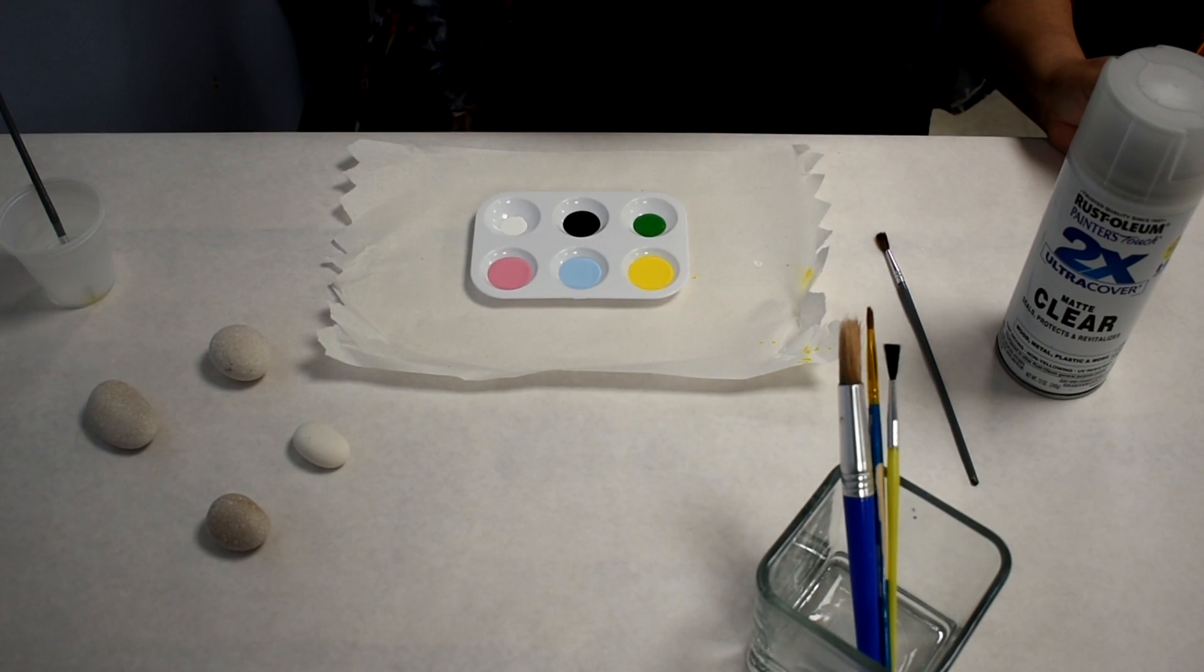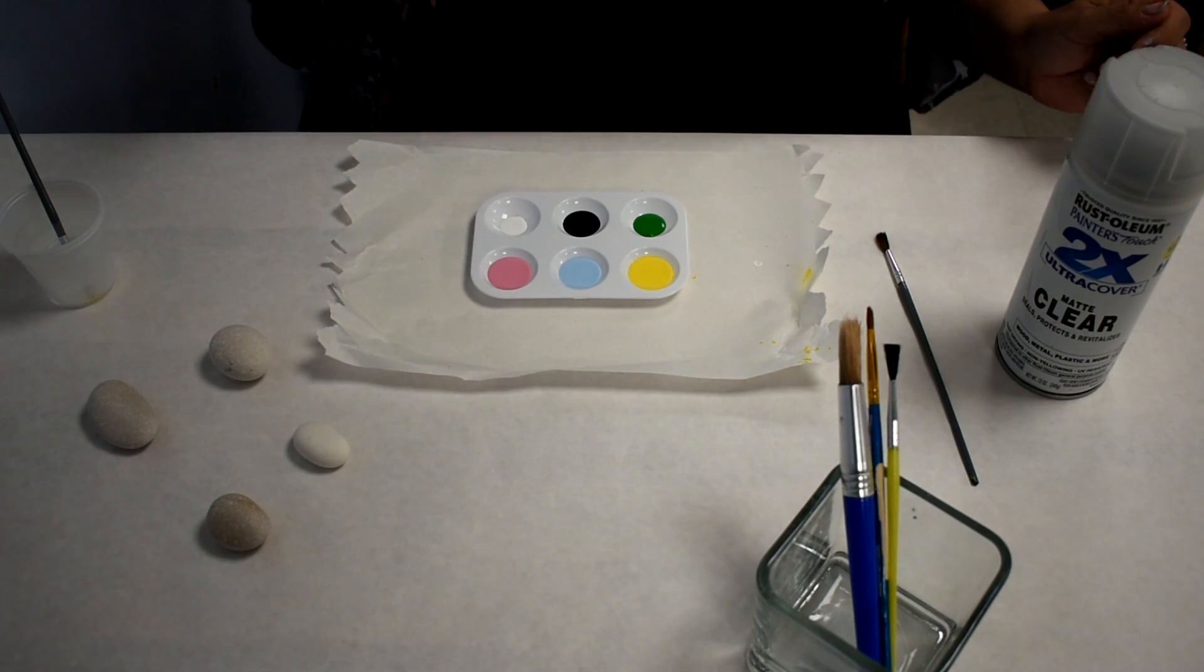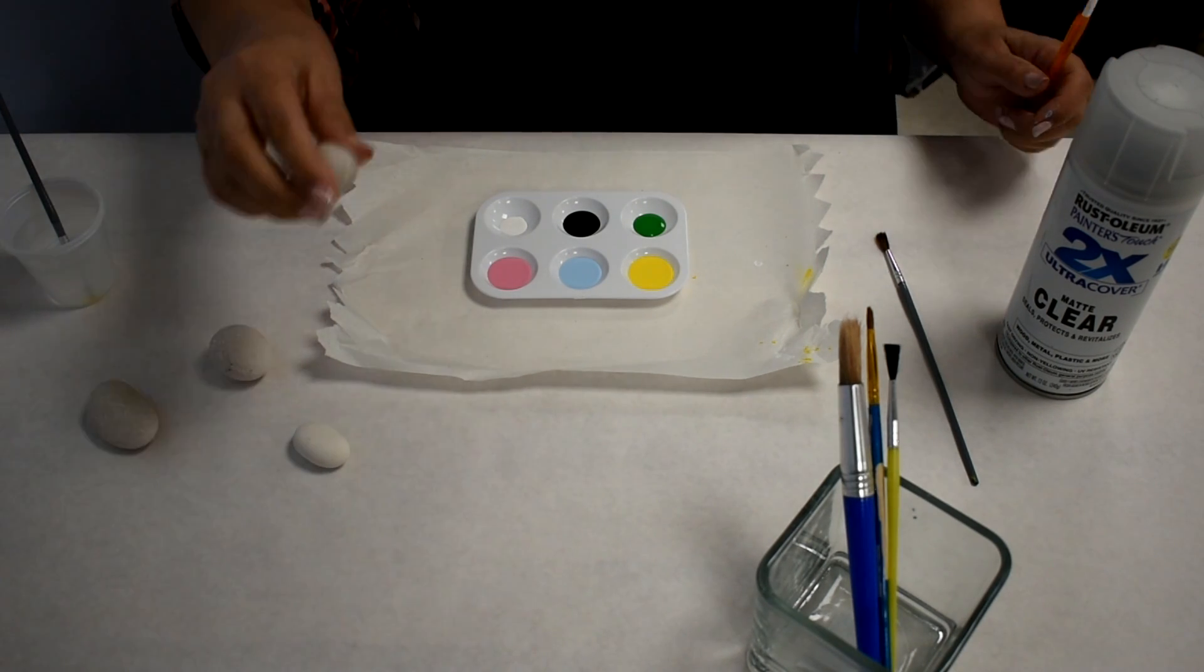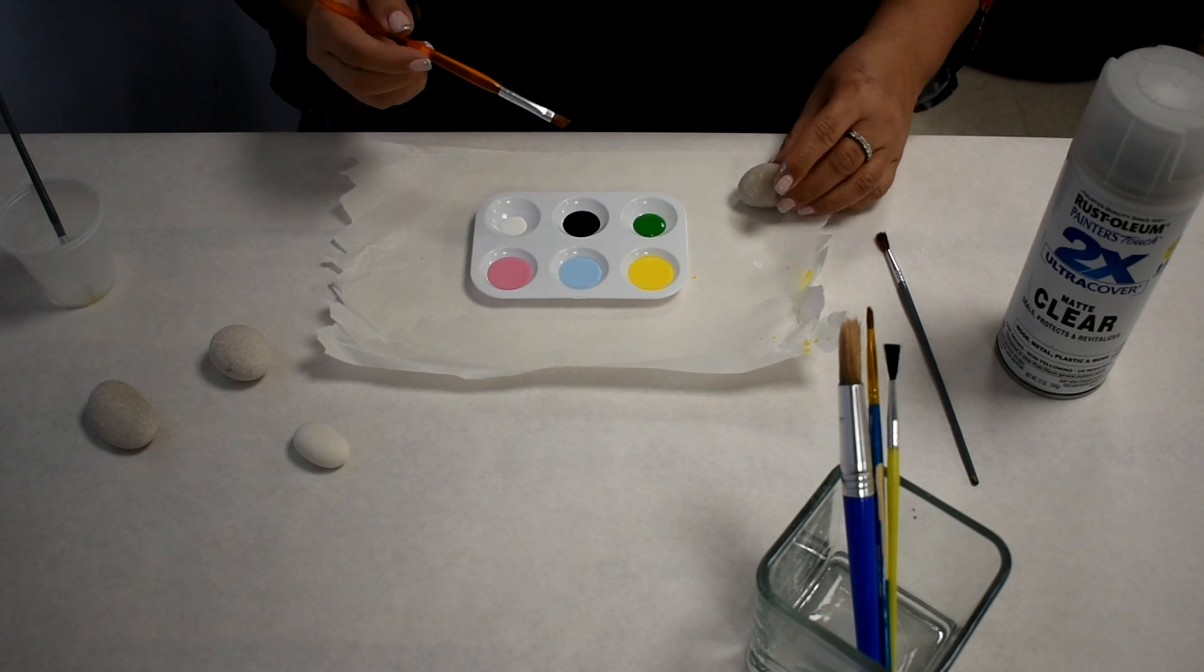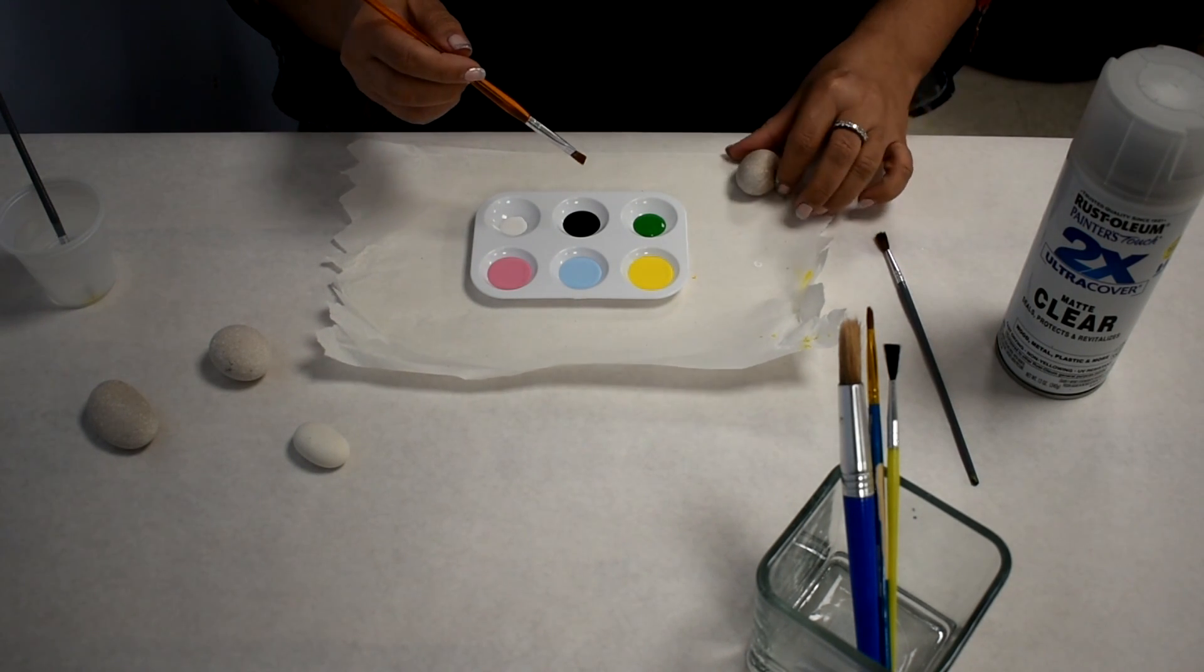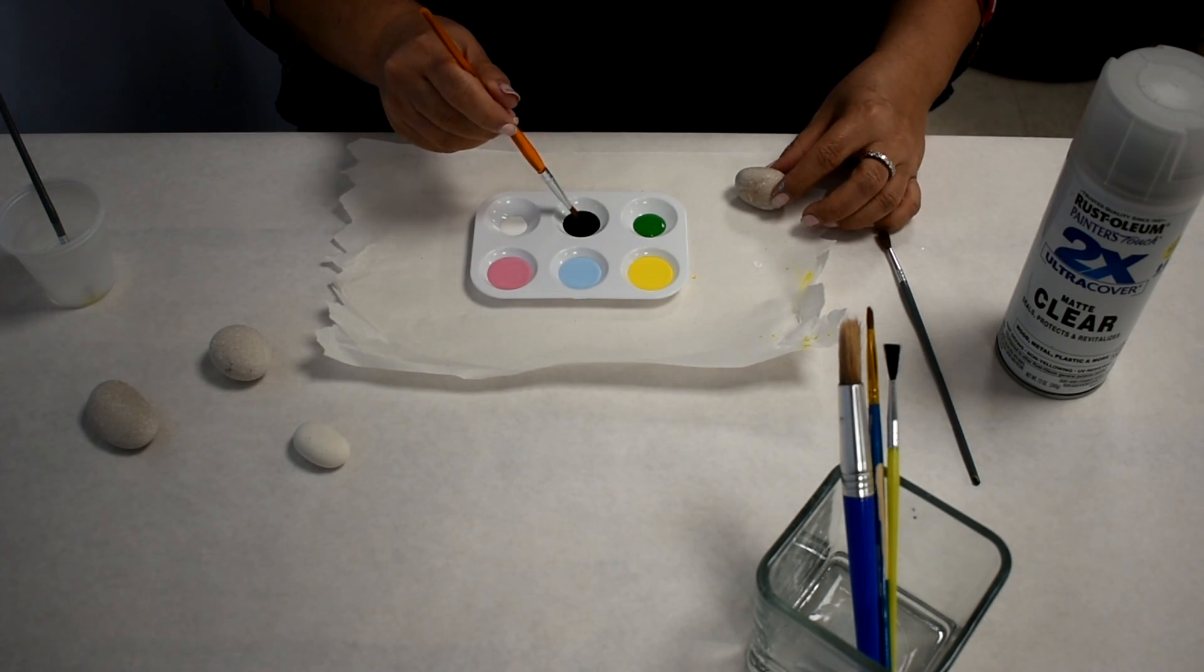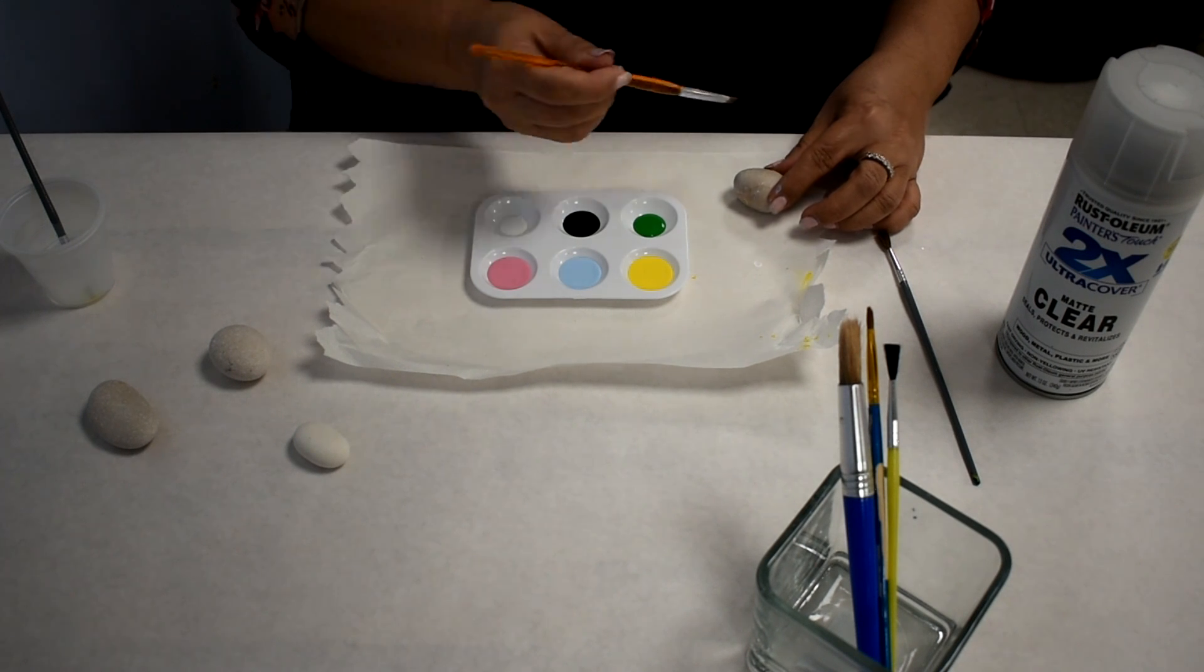Number six, a small container for water. Clean the brush and paper towel to dry them. And number seven, a small plate for your paint colors. Have all your materials ready and let's start.